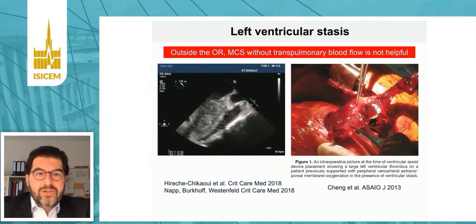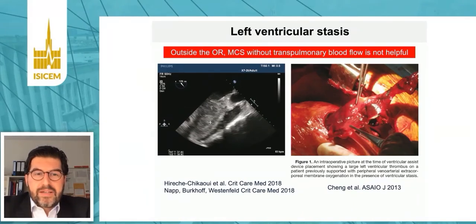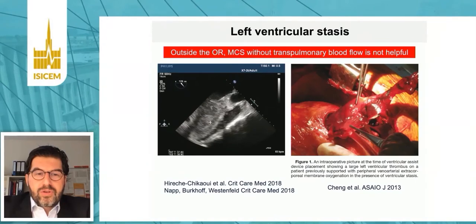A major complication of VA ECMO support, for example, is left ventricular stasis and thrombosis, which needs to be investigated and monitored. By applying sophisticated hemodynamic monitoring, we are able to early detect reduced flow through the pulmonary arterial bed. Use of hemodynamic monitoring is absolutely essential in addition to ECMO to monitor for changes in the body introduced by mechanical circulatory support.